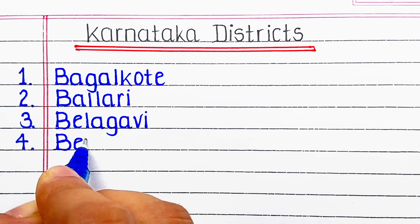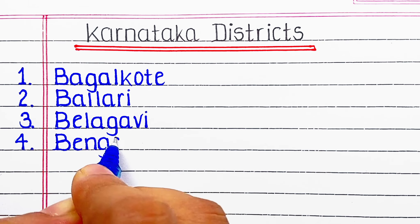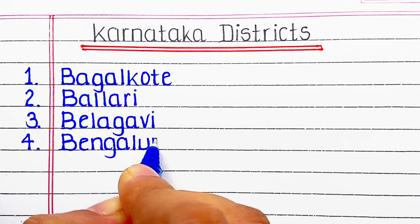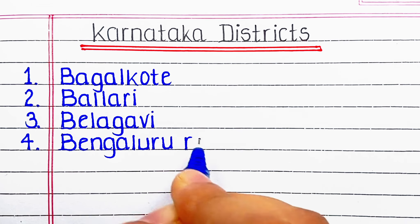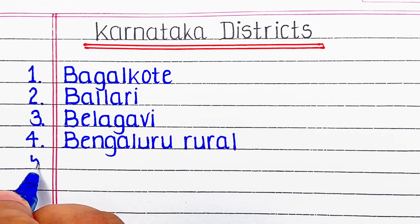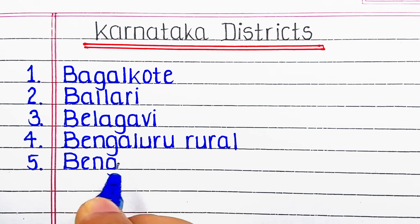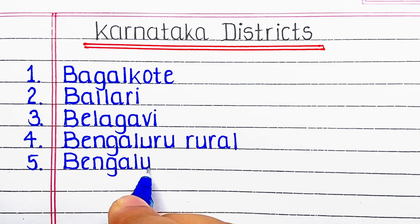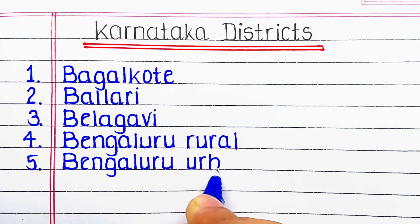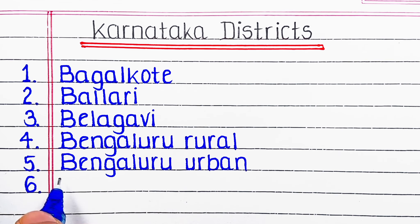First one is Bagalkot. Next is Ballari. Next district of Karnataka is Belagavi. Next is Bengaluru Rural. Next district is Bengaluru Urban. Next district of Karnataka is Chamarajanagar.